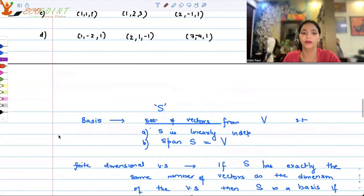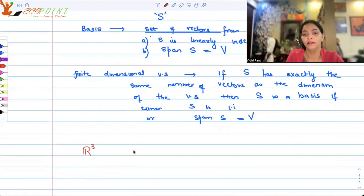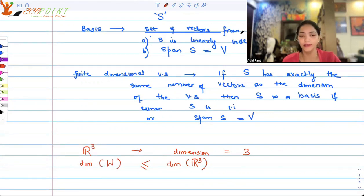Coming to the question now, the dimension of R³ is equal to 3, right? Now, the dimension of subspace of R³ which we are calling W, W is a subspace of R³, will always be less than or equal to dimension of R³. That's what happens in any subspace. If you have a subspace, then the dimension will be less than or equal to. It can be equal to or less, but not more.